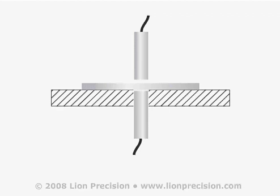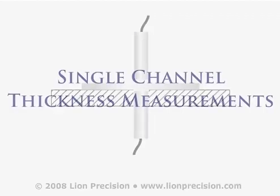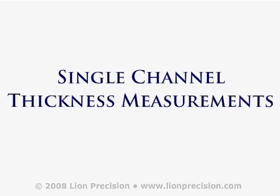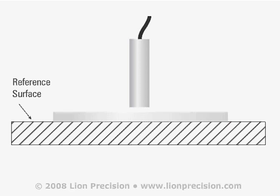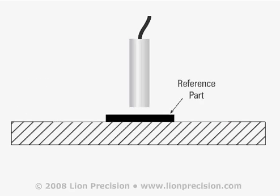First, we will look at the basic single-channel thickness measurement. Single-channel thickness measurements measure the location of the top surface of the part under test while the part rests on a reference surface. As with many non-contact sensor applications, in-process measurements are relative to a reference measurement. A known thickness is established as a reference point and all subsequent measurements indicate the amount of deviation from that reference.